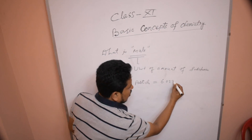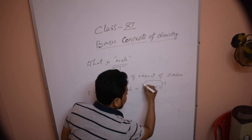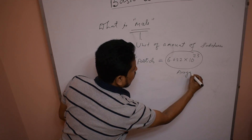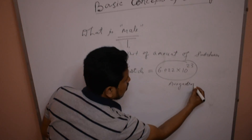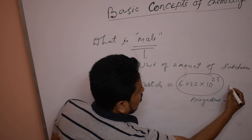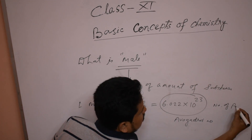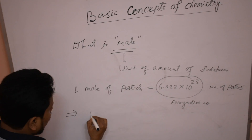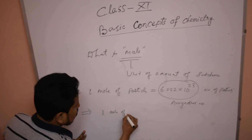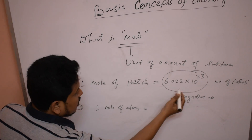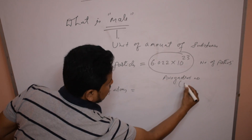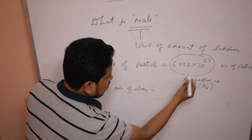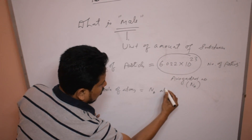That number is known as Avogadro's number — a constant number. Avogadro's number is the number of particles in one mole of anything. For example, one mole of atoms indicates Avogadro's number of atoms. Avogadro's number is denoted by the symbol Nₐ. So one mole of atoms means Avogadro's number of atoms.